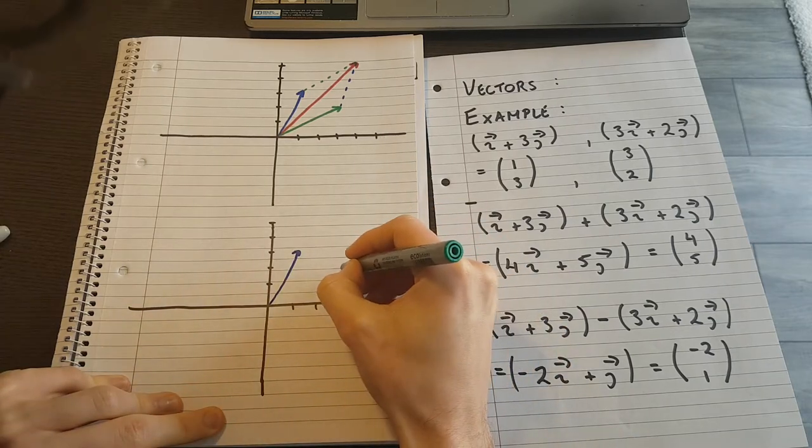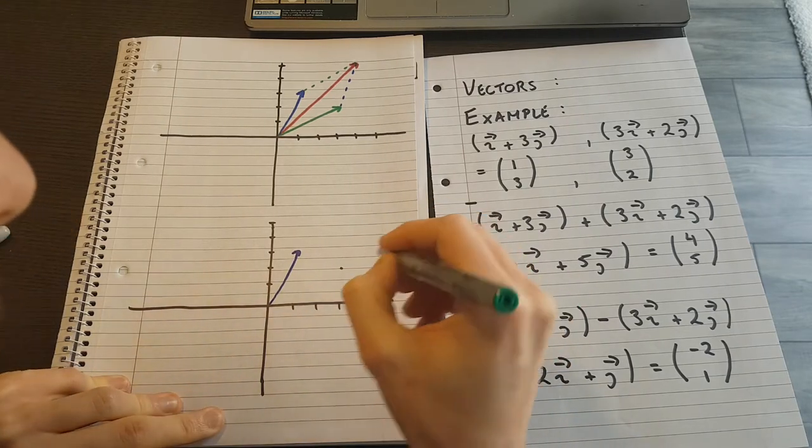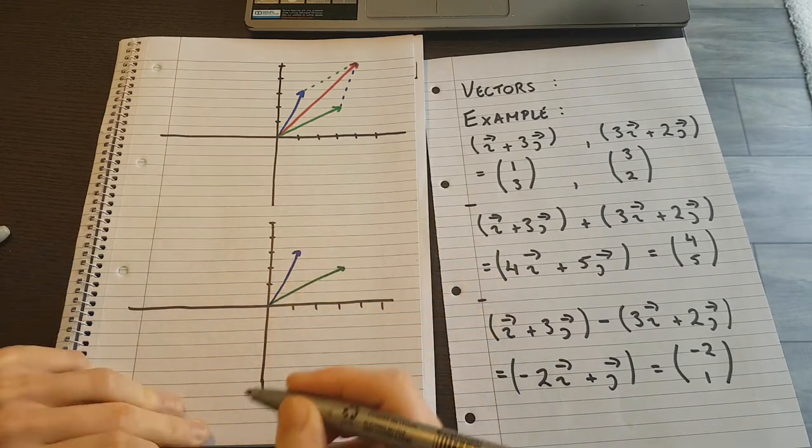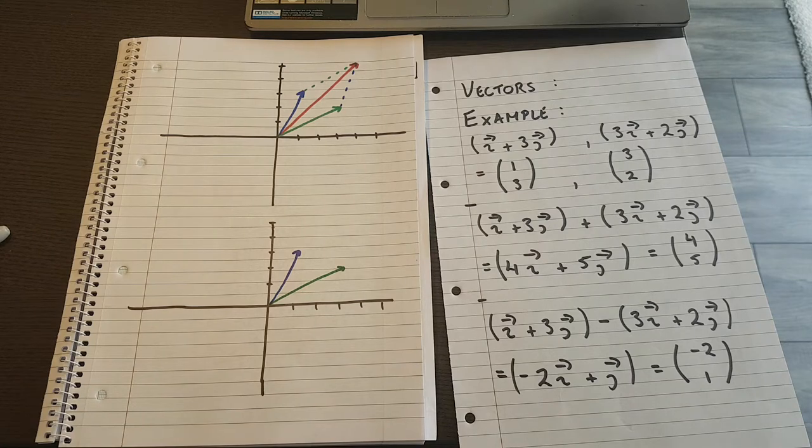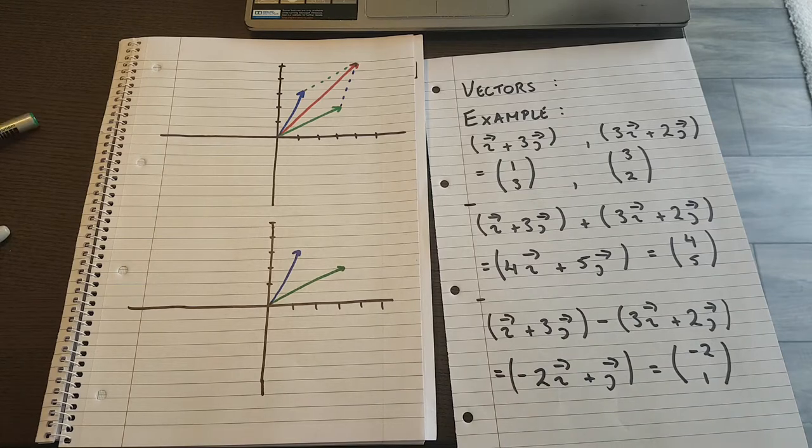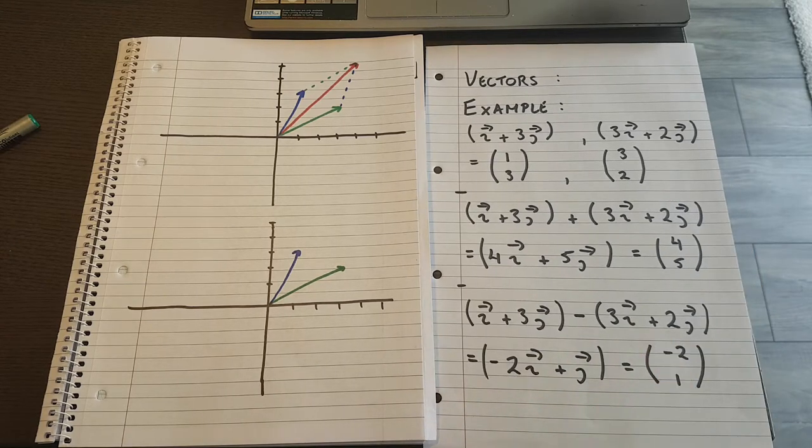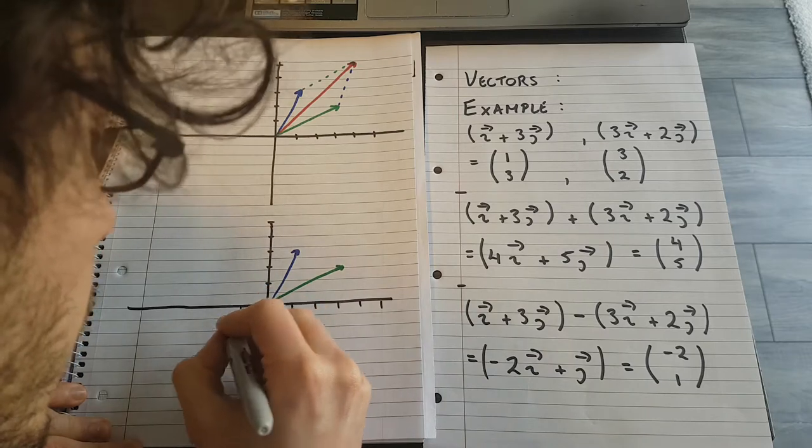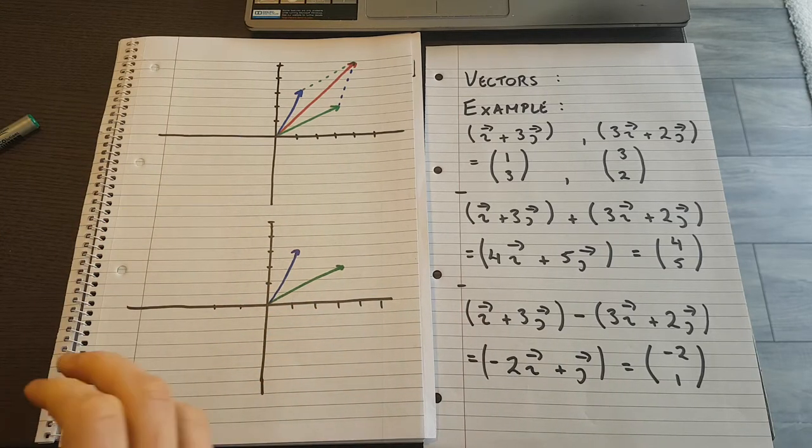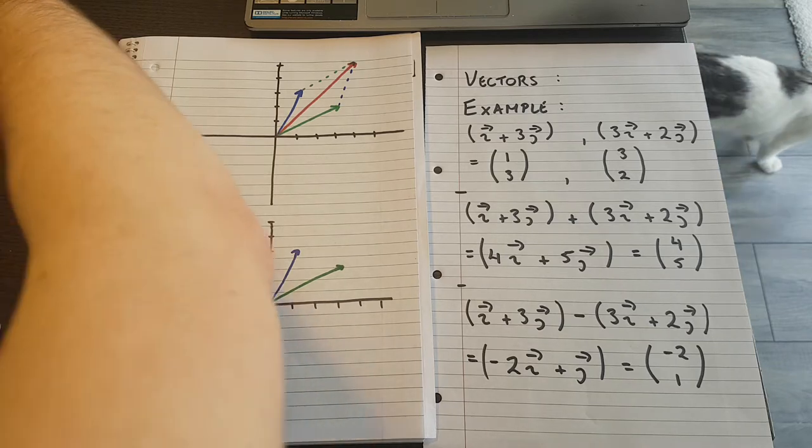Which was 3, 2. Which is over here. And now I want to subtract the green one from the blue one. And where I ended up was minus 2, 1. So if I sketch that in, I ended up with this one here.